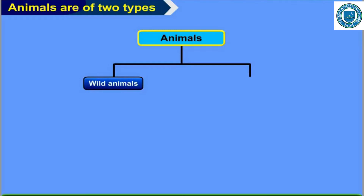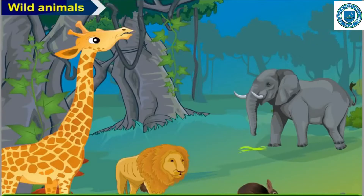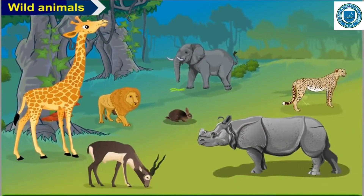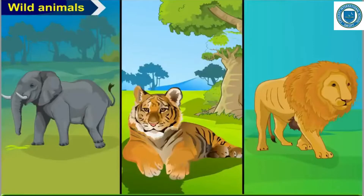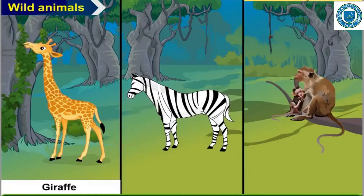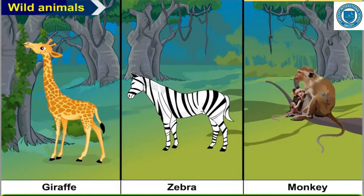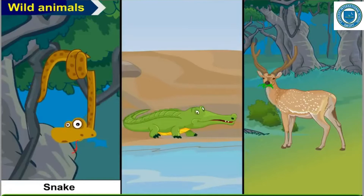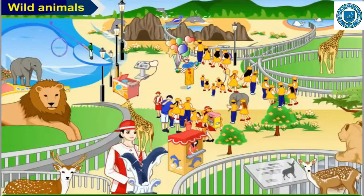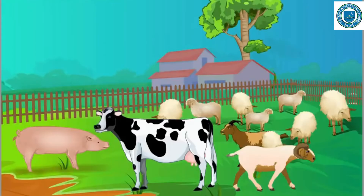Some animals live in the jungle or forest — they are called wild animals. They find food, water, and shelter on their own. For example: elephant, tiger, lion, giraffe, zebra, monkey, snakes, crocodile, deer, and so on. You may have seen them at the zoo.